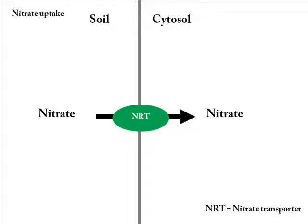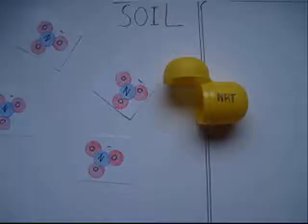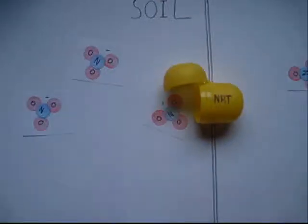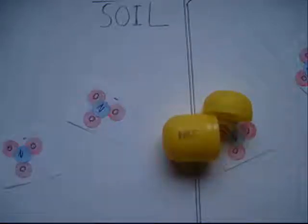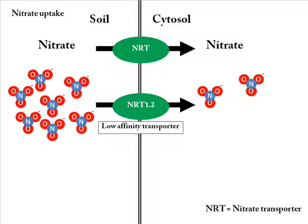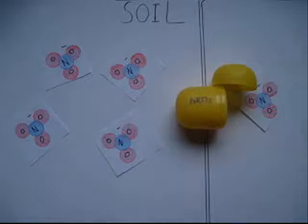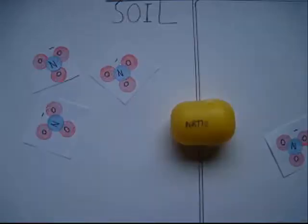Nitrogen is required for optimal plant growth and development. Nitrogen uptake and assimilation is one key part of this. Nitrate is taken up from the soil by the nitrate affinity transporters. The low affinity transporters have a low affinity for nitrate and work most efficiently when the nitrate concentration in the soil is above 1 mM. The nitrate transporter NRT1.2 is one of the low affinity transporters in Arabidopsis.